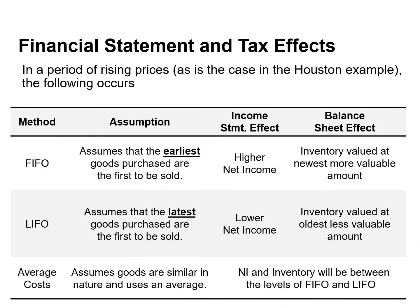In periods of rising prices, FIFO reports the highest net income, LIFO the lowest, and average cost falls in the middle. If prices are falling, the results from the use of FIFO and LIFO are reversed.